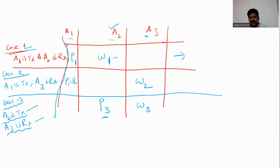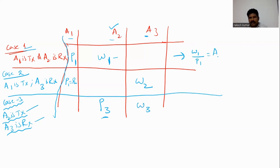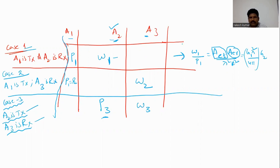Now apply the Friis transmission equation for Case 1. The Friis transmission equation gives the relationship between received power and transmitted power in terms of effective aperture. So W1 over P1 equals (Ae_t × Ae_r) / (λ² × r²), where Ae for A1 is g1 × λ² / (4π) and Ae for A2 is g2 × λ² / (4π).